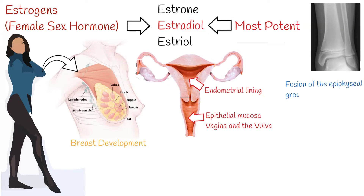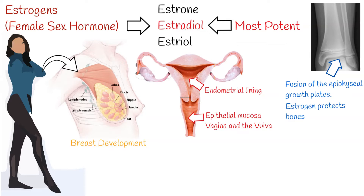During puberty, estrogen aids in the development of long bones and fusion of the epiphyseal growth plates. Estrogen also protects bones by inactivating osteoclast activity, preventing osteoporosis in both estrogen-deficient and postmenopausal women.